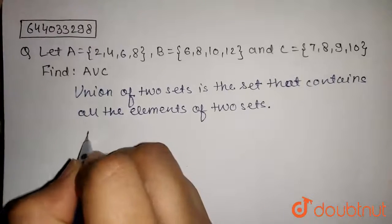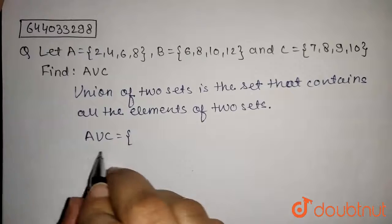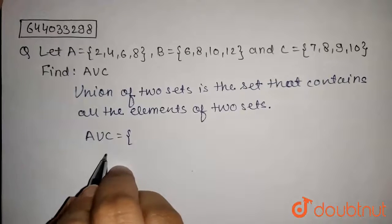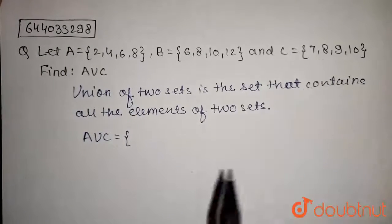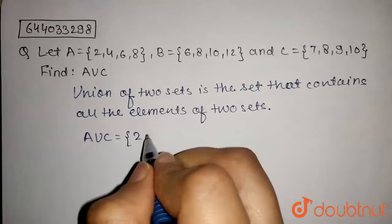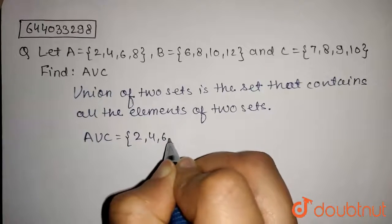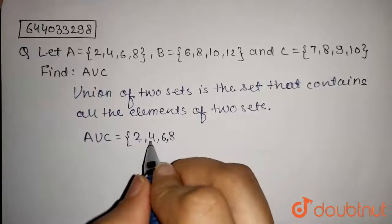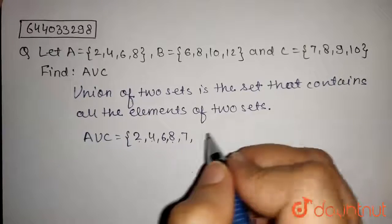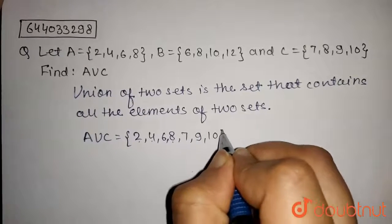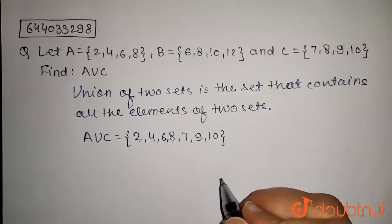A union C will contain all the elements of A and C. So from this, the elements of A union C will be 2, 4, 6, 8, 7, 8 is already here, so 9 and 10.